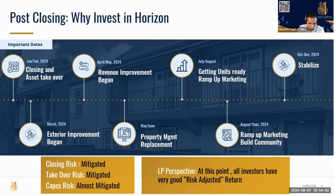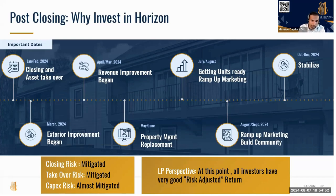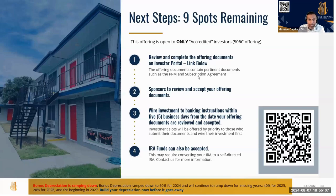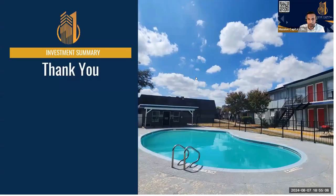That's what you expect as an LP and that's what you want to build as a GP. Learning has a price — it's the time value of money and the cost of work orders that come with inexperience. Overall, we're really excited about the Horizon project. We raised $4 million and have about $1.5 million gap remaining to finish — we've opened that up. For LPs investing today: closing risk is gone, takeover risk is gone, and capex is almost finished. All numbers came out similar to projections — we went over budget in one spot — but from an LP perspective this is a good risk-adjusted return.